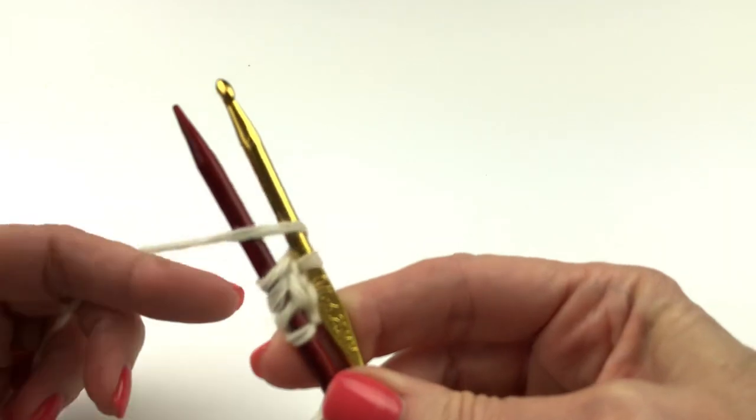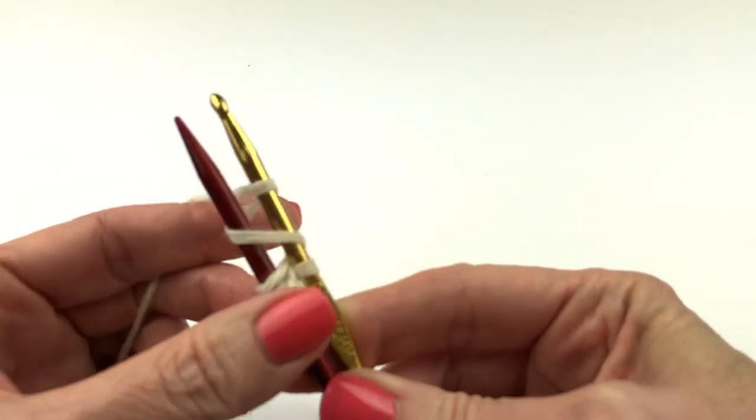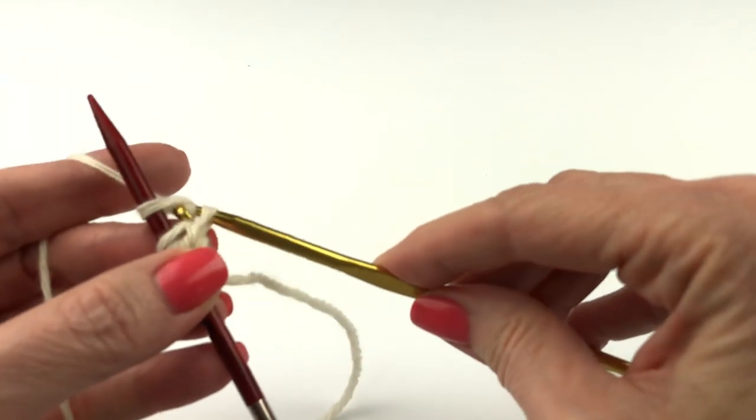Around, around again, yarn behind, then draw down and through.